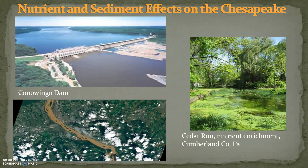Nutrients and sediment are the two largest contributors to stream impairment in the Susquehanna River Basin and are extremely widespread. Sediment and nutrients have negatively impacted aquatic life and can preclude using water for human consumption. Because the river feeds into the Chesapeake Bay, excessive nutrients can lead to algal blooms and eventually oxygen depletion, which impacts aquatic species such as mussels and blue crabs.